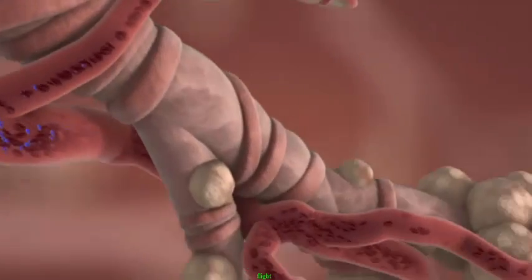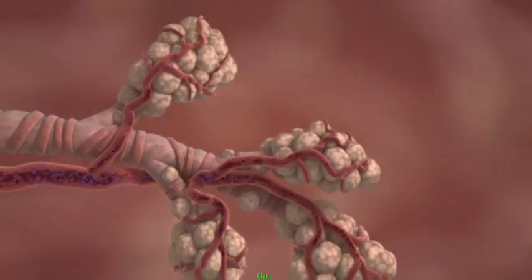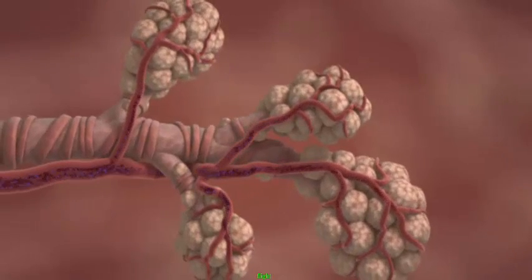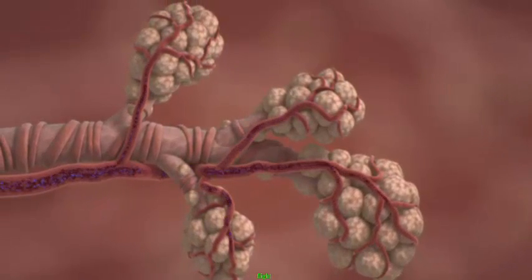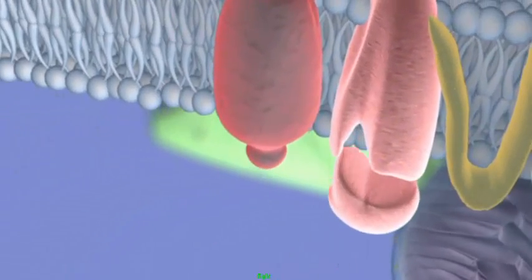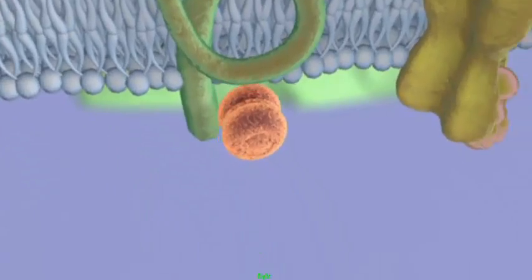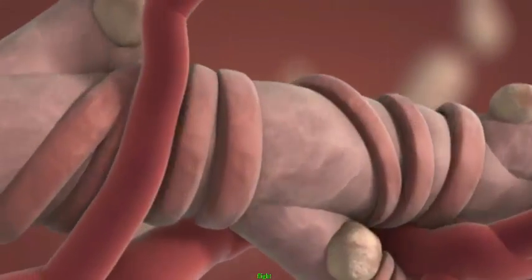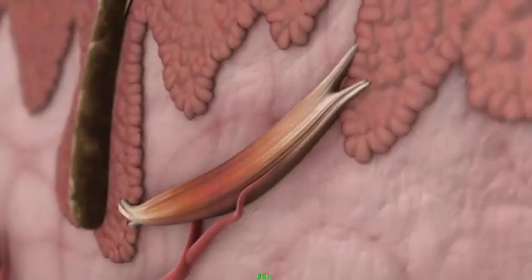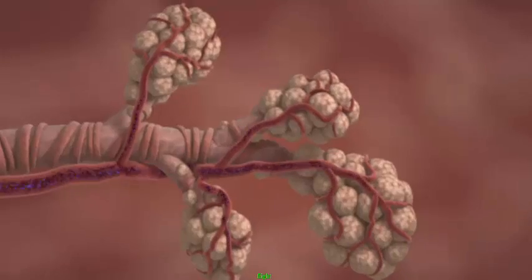In the lungs, the signaling molecule docks on muscle cells wrapped around bronchioles, but these cells relax instead of contract to allow more oxygen into the blood. Because the protein machinery inside each kind of muscle cell is different, this single type of signaling molecule can cause both relaxation and contraction. Many signaling molecules work this way.